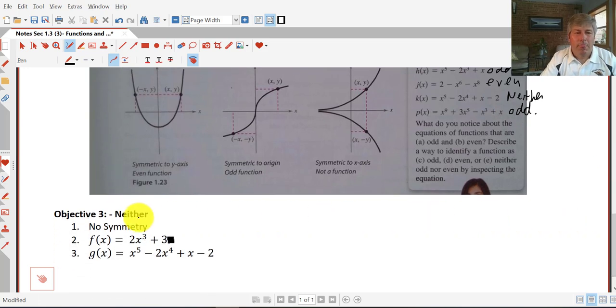So neither, in objective 3, neither even nor odd, has no symmetry at all, or it might be symmetrical about the x-axis. Something like 2x cubed plus 3, as we saw earlier with 2x cubed plus 1, that's going to be neither. Or if we mix our exponents between evens and odds, that is not going to be an even or an odd function.